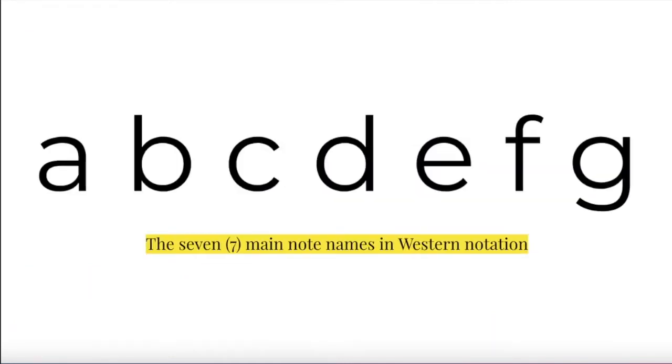There are seven main note names in Western notation, named with the first seven letters of the alphabet. A, B, C, D, E, F, and G.